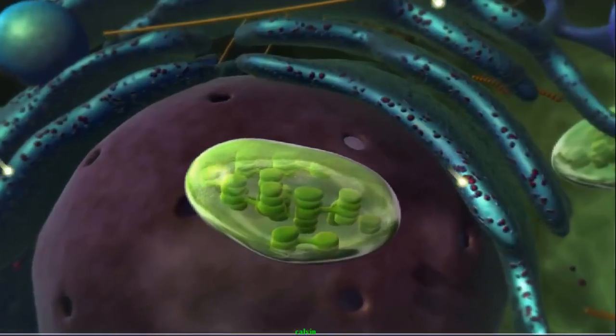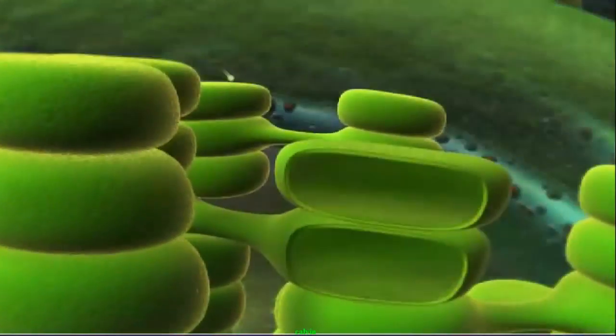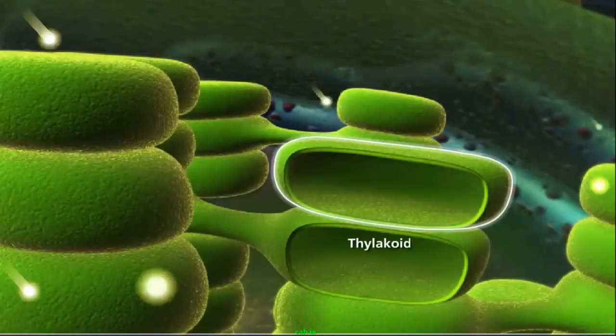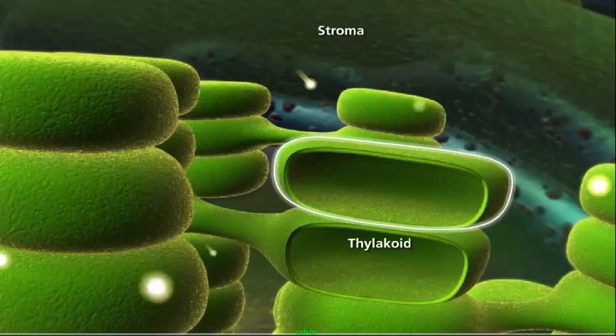Within the chloroplast are small disc-like structures called thylakoids, which are surrounded by a fluid-filled space called the stroma. The reactions that synthesize glucose, the Calvin cycle, occur in the stroma.